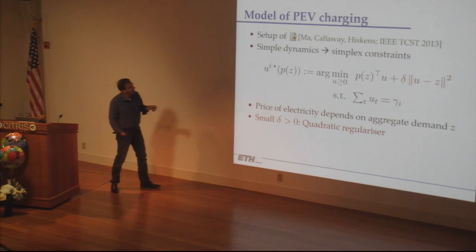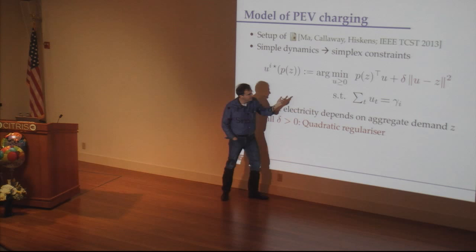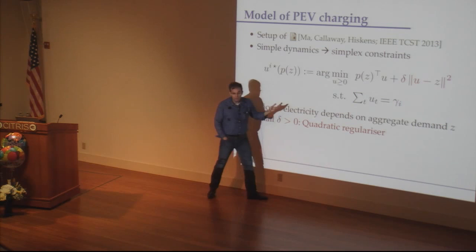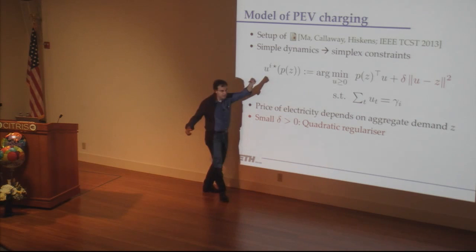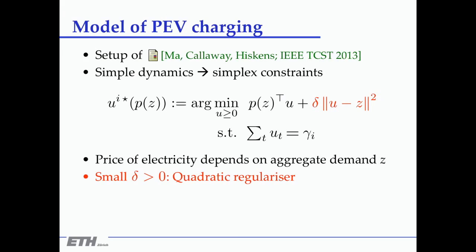This is Callaway's model. You say: I have a total charge vector u over the horizon I want to take, and what am I going to pay for it? There's a price of electricity times the charge I'm taking at any point in time — you think of them as vectors indexed by the horizon, à la model predictive control. The price depends on whatever everyone else is doing.